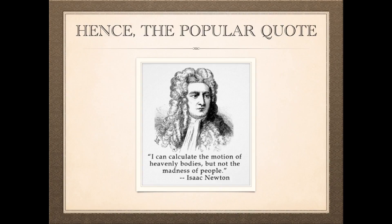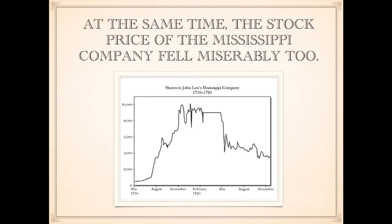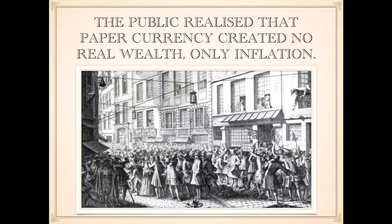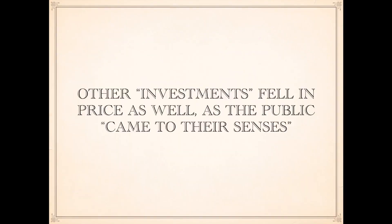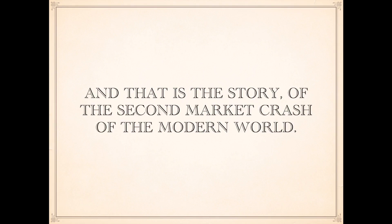Hence the popular quote: 'I can calculate the motion of heavenly bodies, but not the madness of people.' — Isaac Newton. At the same time, the stock price of the Mississippi Company fell miserably too. The public realized that paper currency created no real wealth — all you do is change your coin into paper, you're not making anything, you only created inflation. Other investments fell as well, and the public came to their senses. That is the story of the second market crash of the modern world.